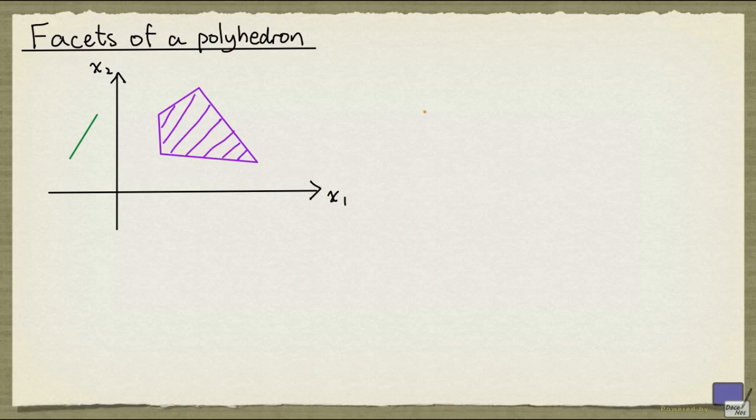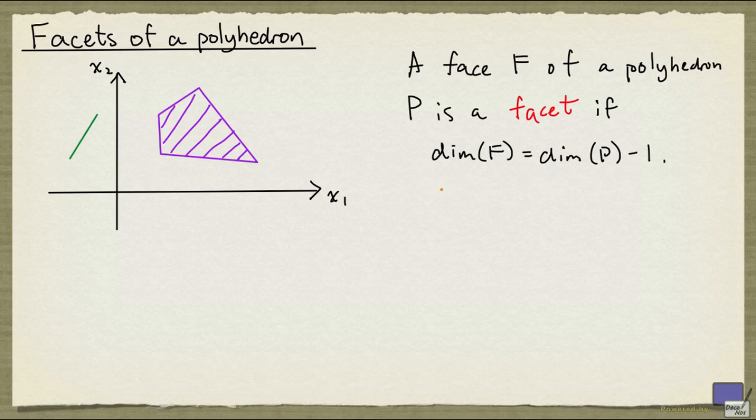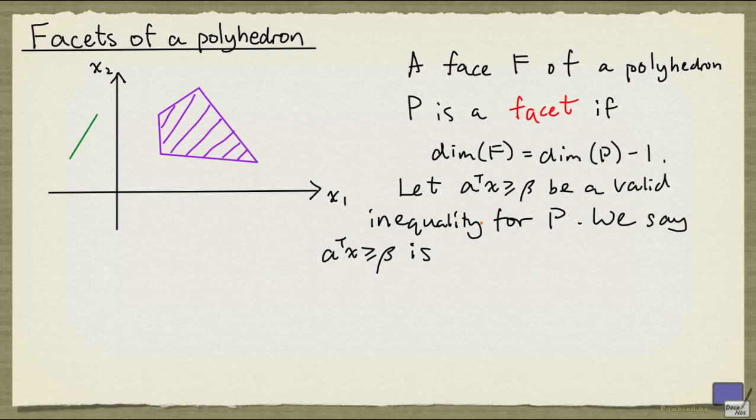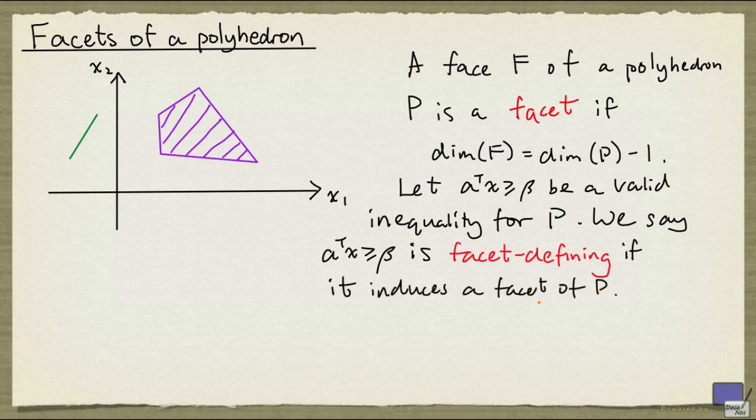So what is a facet? A face F of a polyhedron P is a facet if the dimension of F is 1 less than the dimension of the polyhedron. Let A^T x ≥ β be a valid inequality for the polyhedron P. We say that this inequality is facet-defining if it induces a facet of P.